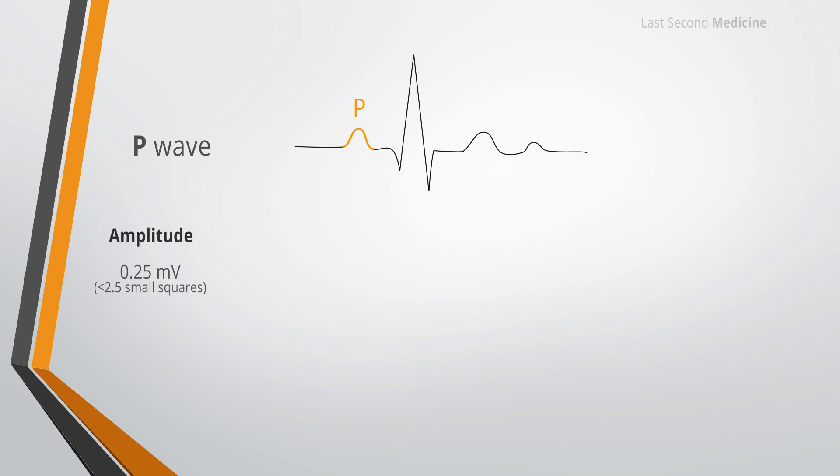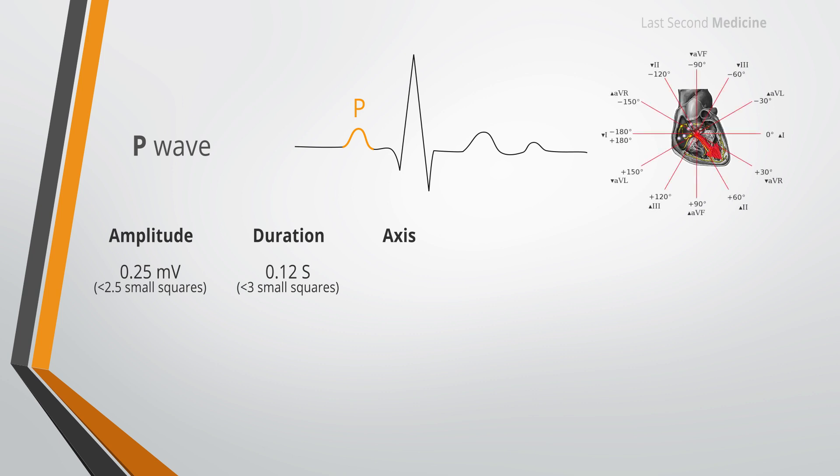P wave amplitude rarely exceeds 2.5 small squares, which is 0.25 millivolts. The duration of the P wave should not exceed 3 small squares, which is 0.12 seconds. The wave of depolarization is directed inferiorly and towards the left.